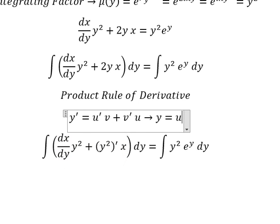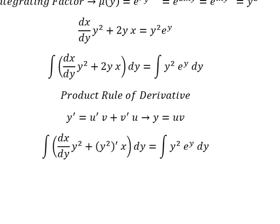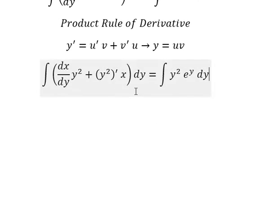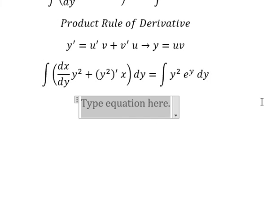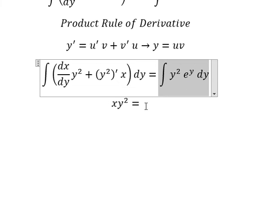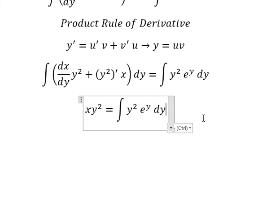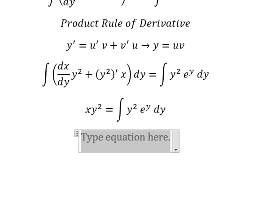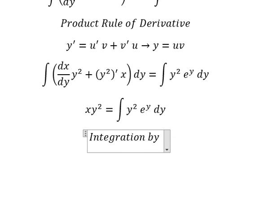And this is y squared multiplied by u. If we do this integral, we have u times v. And now this integral here gives us s times y squared. And now I will show you the technique — we need to use integration by parts.